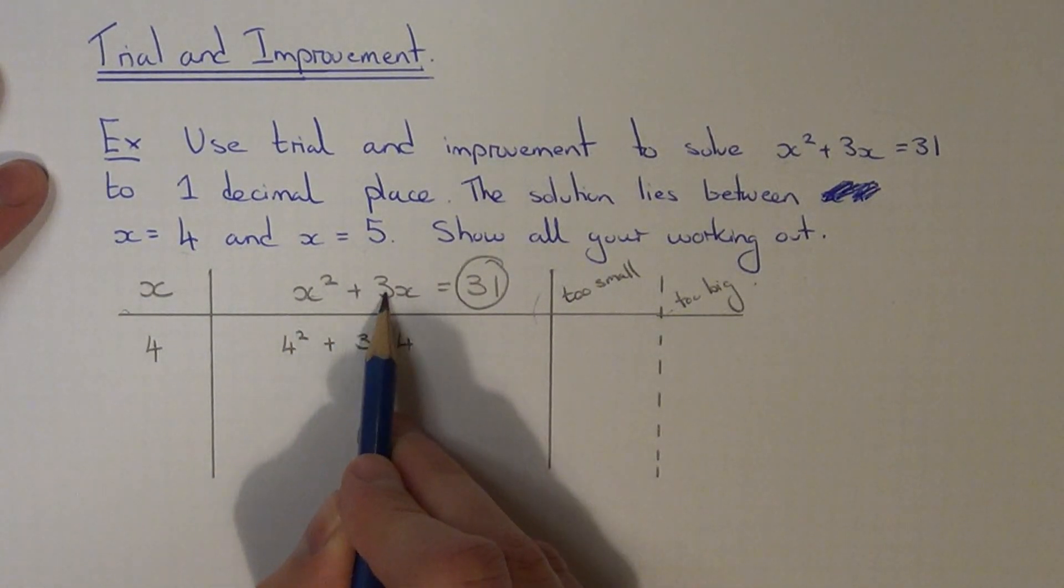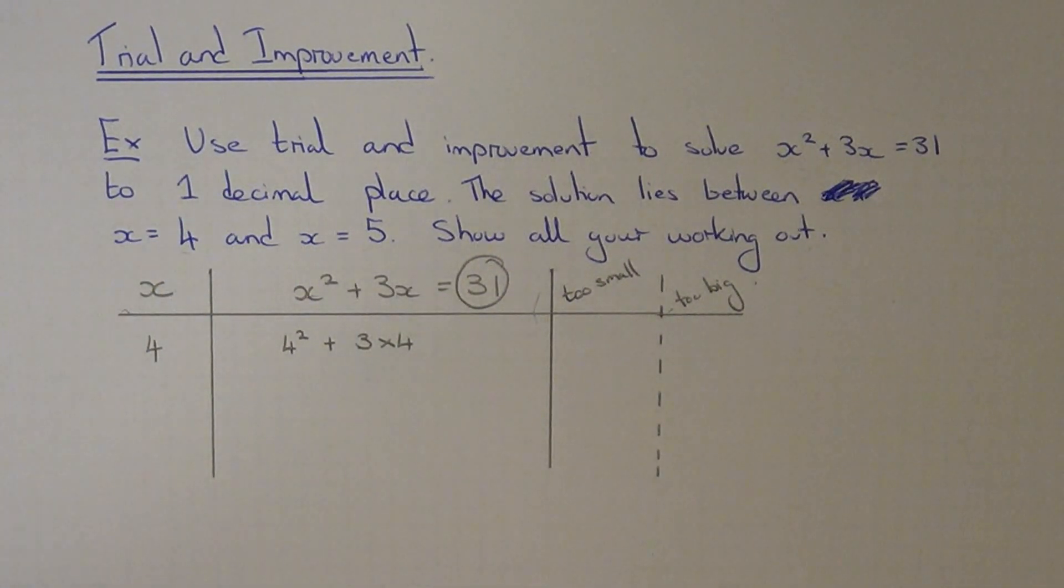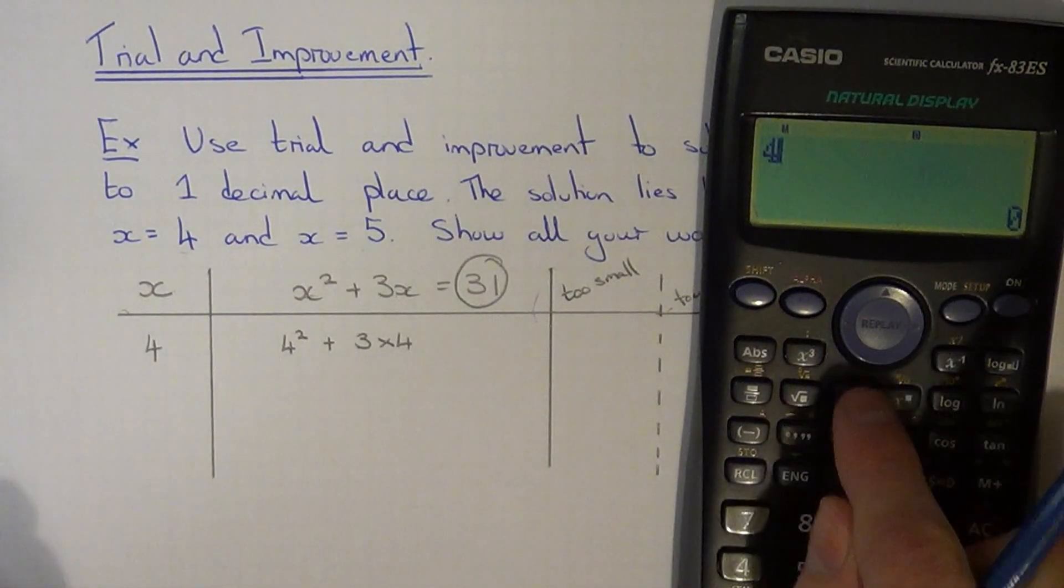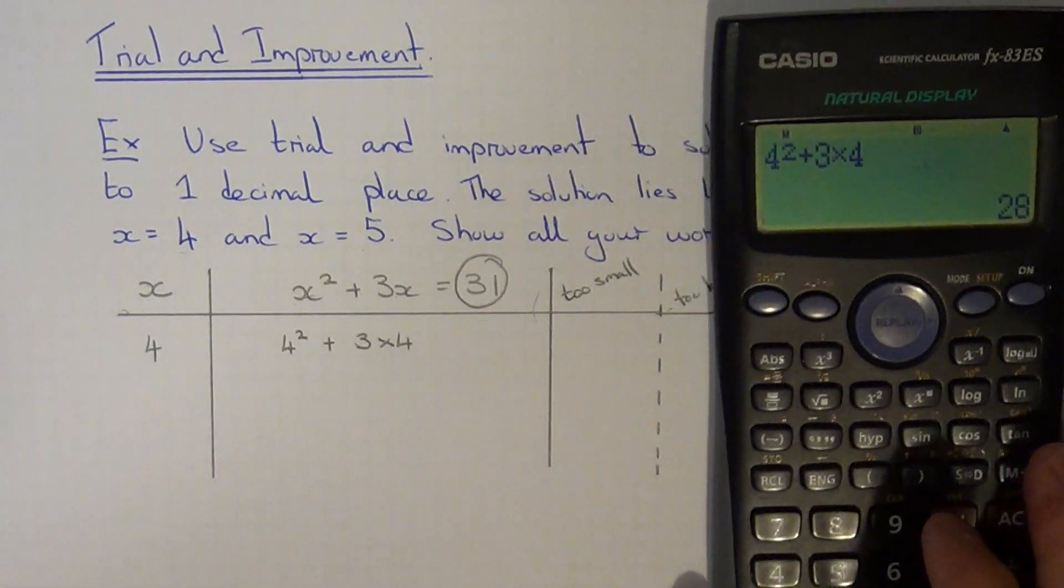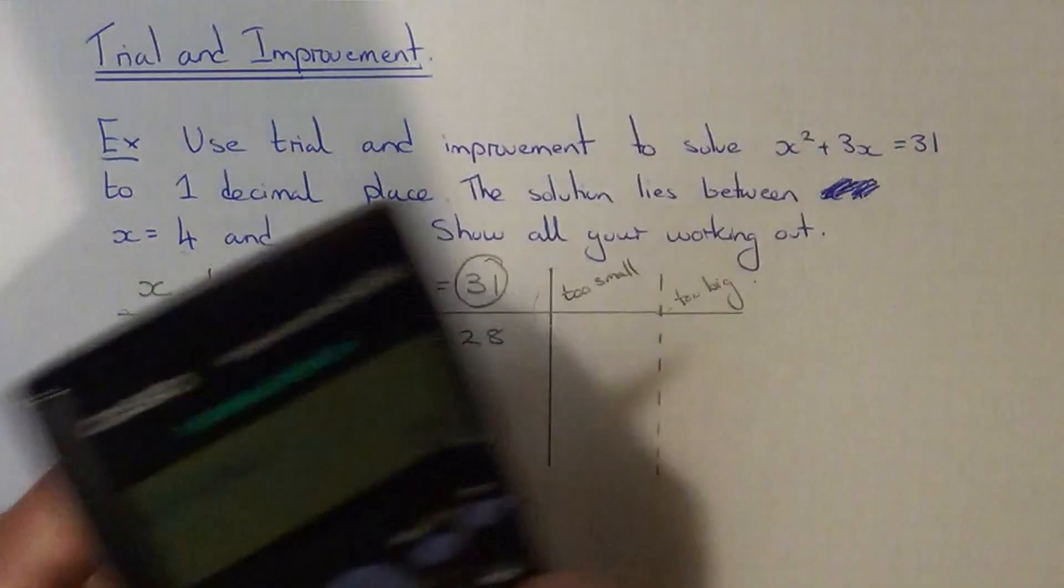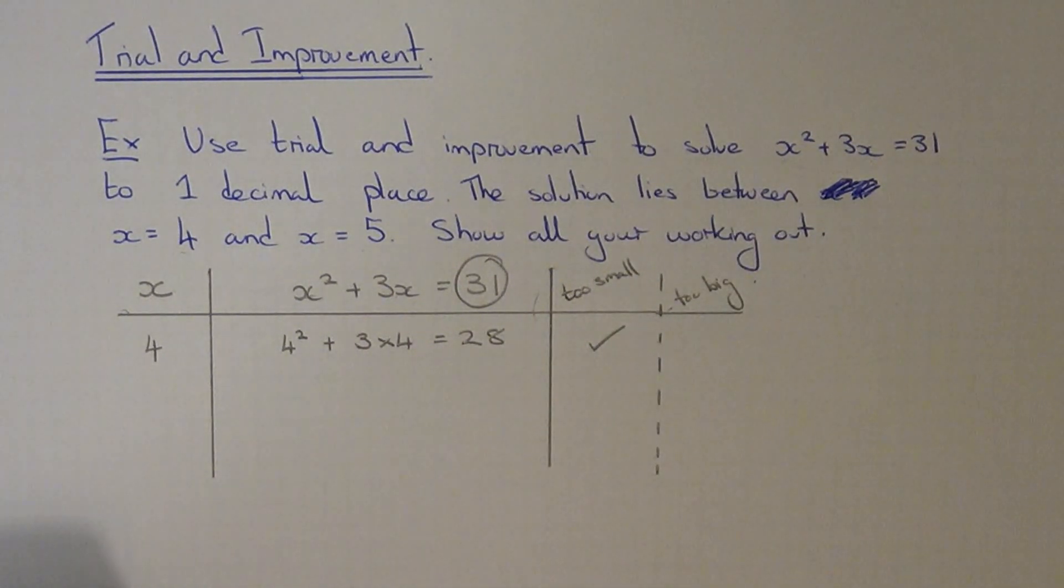Make sure you put the 4 in for both x's. So it's 4 squared plus 3 times 4, because 3x means 3 times x. So if you get your calculator and type this one in, the first one gives us 28. So this is under 31 as you'd expect. So we tick too small.